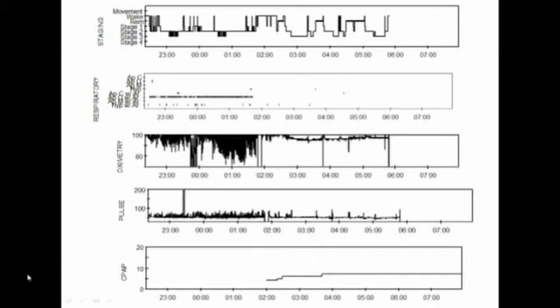Looking at this sleep study slide, we can see that at the top the person isn't getting any deep sleep or REM sleep, and in the third box down their oxygen is driving down very low — into the 70 percentile range. Then in the very bottom, when they put the patient on CPAP, all their problems miraculously go away. This is what we're trying to do when we identify patients with sleep apnea and treat them.